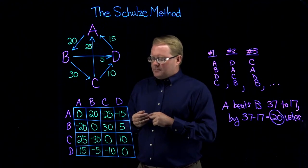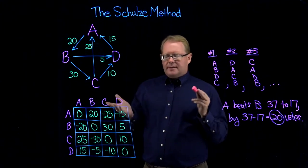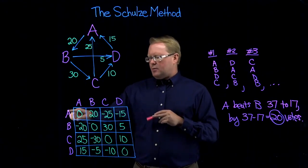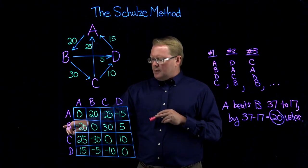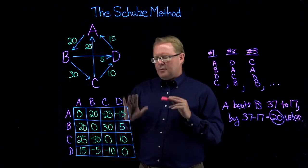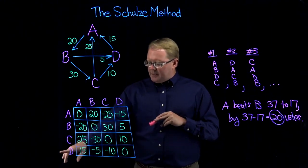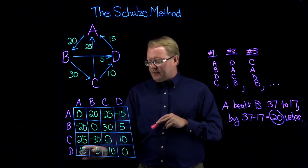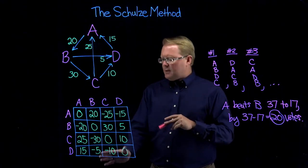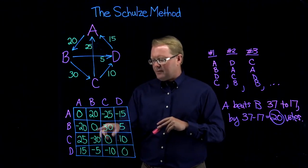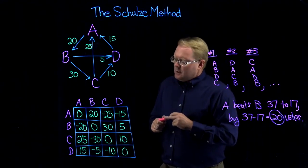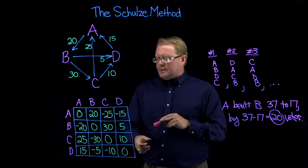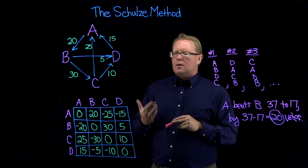Looking back at the worst defeat method, you could look at who has the least worst defeat. The worst defeat for A is minus 25, for B it's minus 20, C has minus 30, and candidate D only has a worst defeat of minus 10. That's the least worst defeat of all candidates — everyone else has a bigger negative number in absolute value. So worst defeat says that D wins.